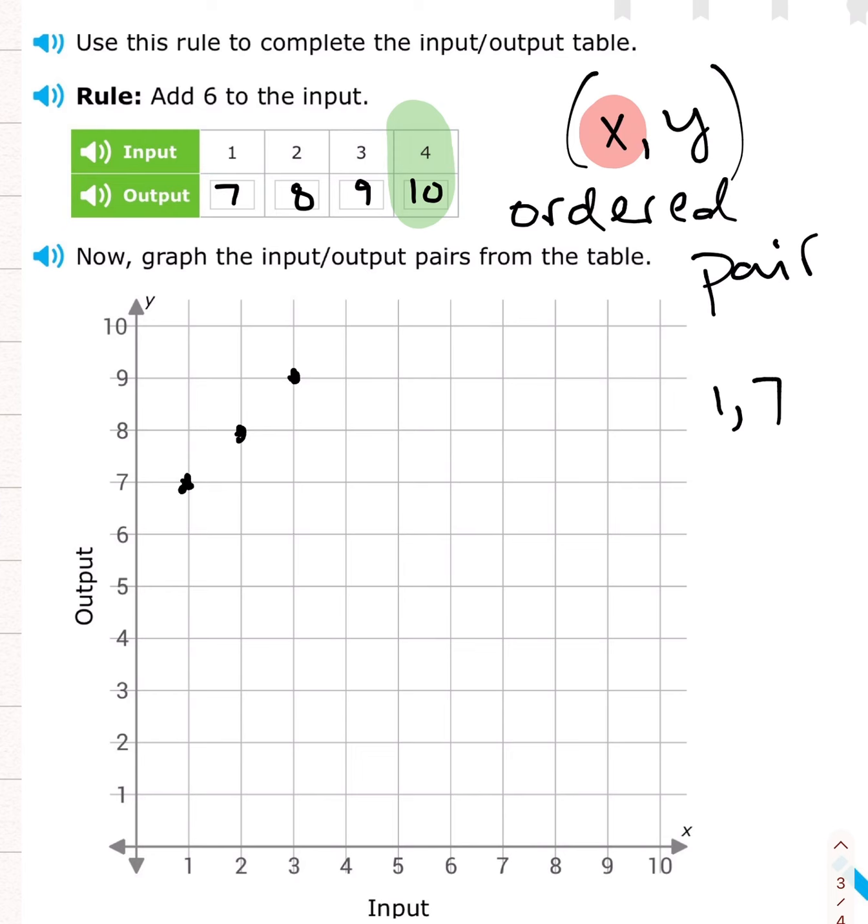All right. My next ordered pair is 4, 10. Over 4, up 10. Over 4, up 10. Is that what you guessed?